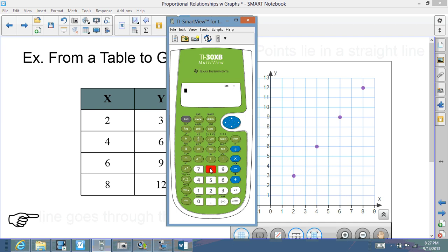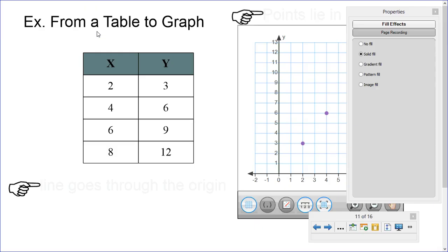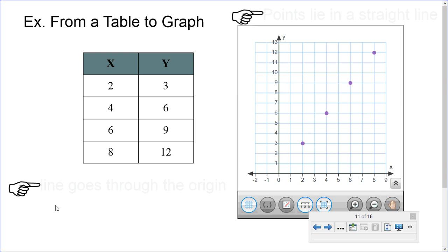Eight, twelves. Hey, that's two thirds. All right. So, they're all simplified down to two thirds. So, we can tell that this is a proportional relationship. So, we have a proportional relationship here.